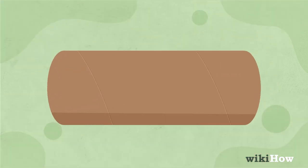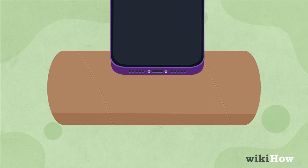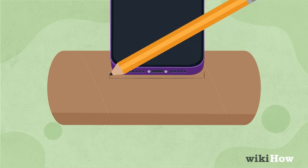Lay the paper roll on its side and place the base of your iPhone against it. Then, trace around the base of the iPhone.